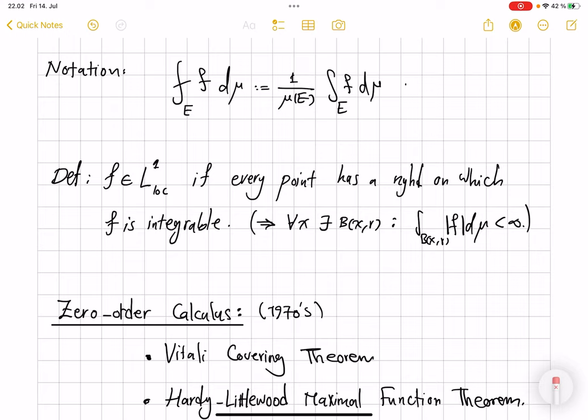The common notation in analysis for integral average of a function over a set is the barred integral. So if you have a set E and a function that is integrable on E, this symbol means you integrate the function over E and then divide by measure of E.